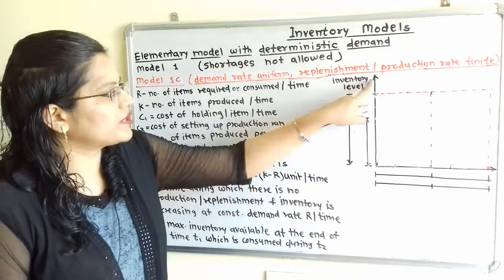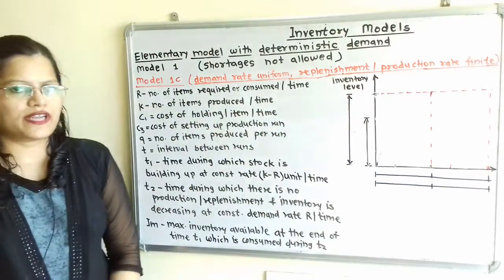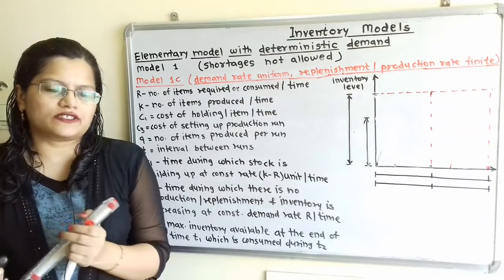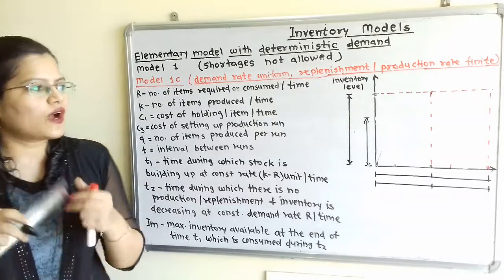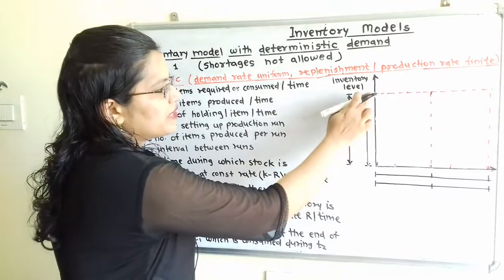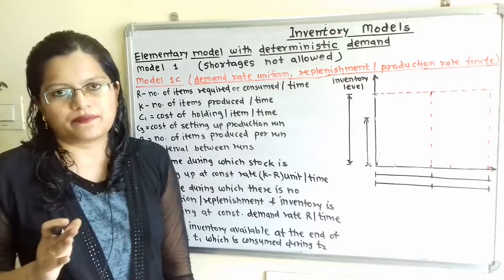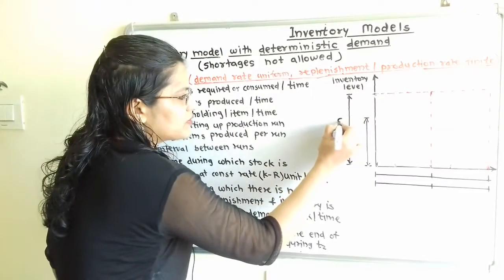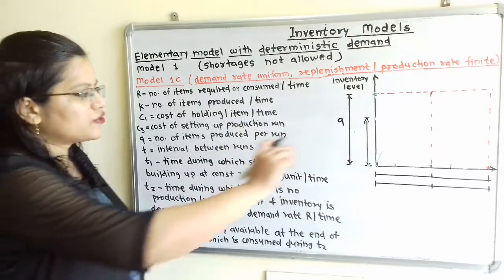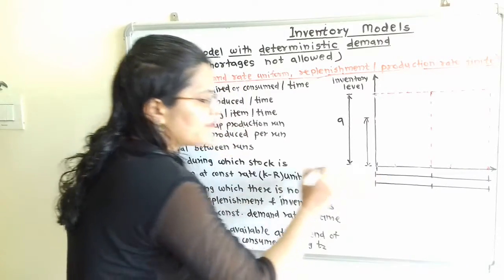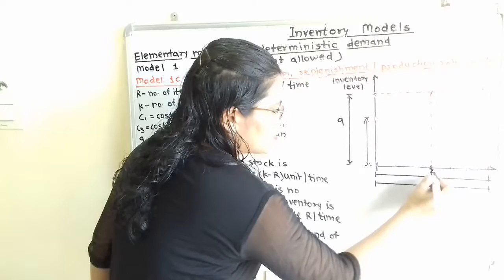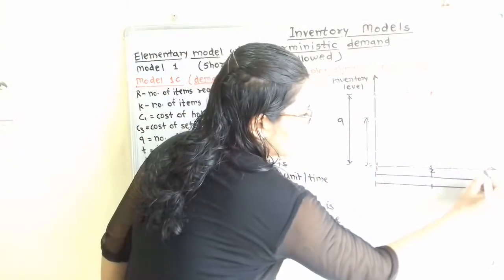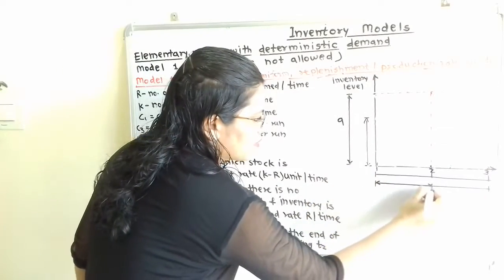On the vertical line, we show Inventory Level, and on the horizontal line, we show Time. For Inventory Model 1, there is a Fixed Lot Size — a Fixed Quantity Ordered, denoted Q — ordered each time. Orders are placed at fixed time intervals T: first order, second order, third order, all equally spaced.